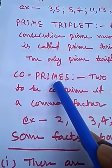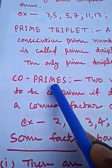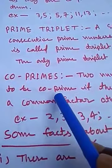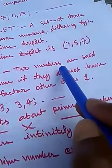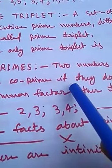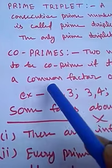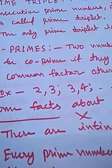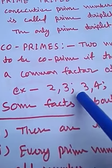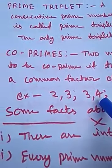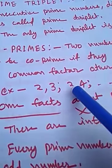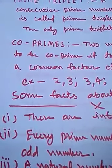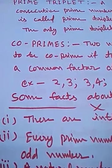Any two numbers whose HCF is 1 are called co-prime numbers. For example, 2 and 3, and 3 and 4 are co-prime numbers because the HCF of 3 and 4 is 1 and the HCF of 2 and 3 is also 1. So co-primes are any two numbers whose HCF is 1.